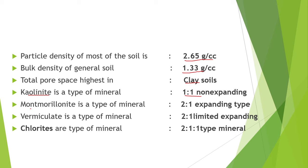On the basis of number and arrangement, silicate clays are classified into 1:1 type, 2:1 type, and 2:2 type. The example of 1:1 type mineral is kaolinite. In kaolinite, 1 tetrahedral and 1 octahedral sheet is present.